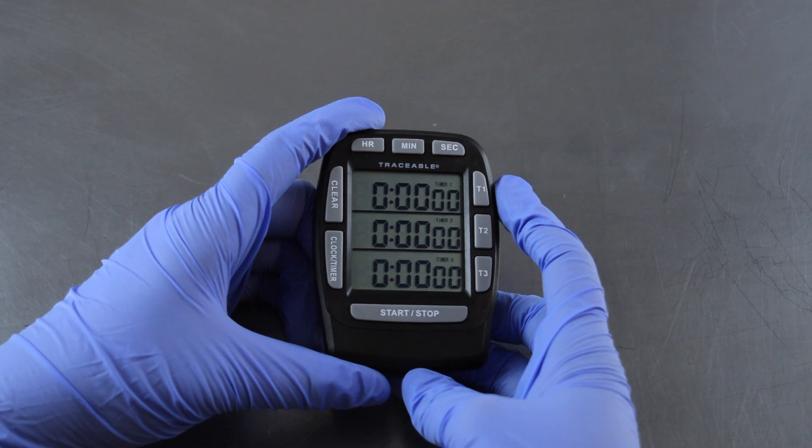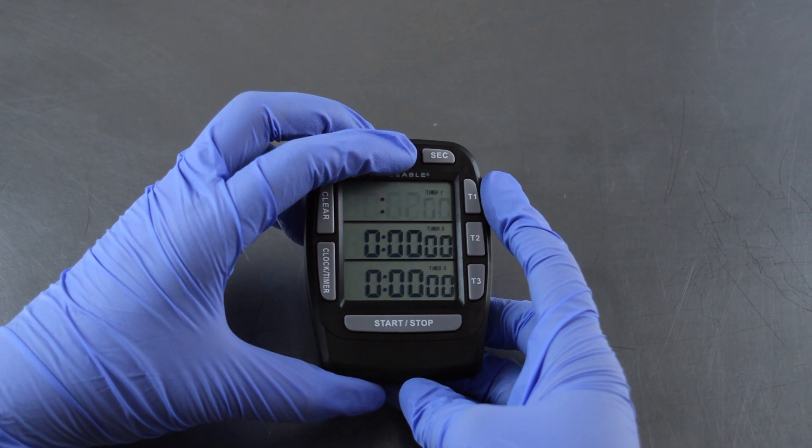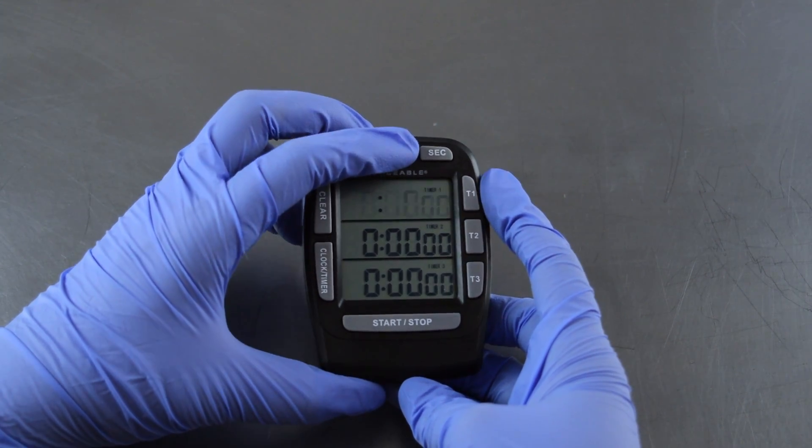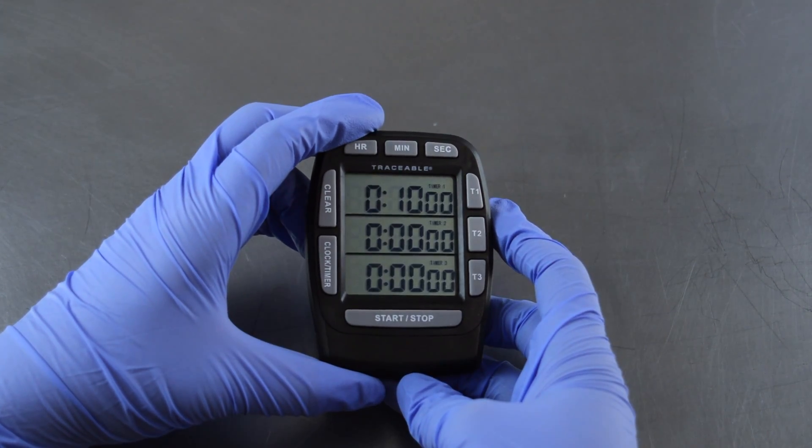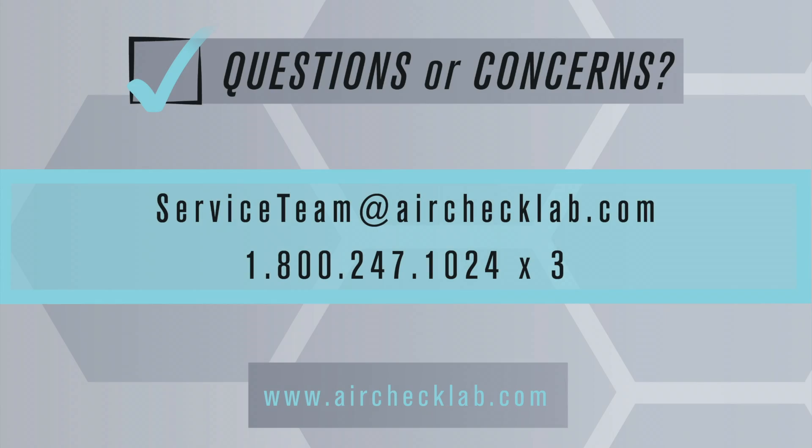If you're testing for microorganisms in your compressed air, you only need to use T1. Set for 10 minutes and press T1 again to lock. To begin timer 1 only, press T1. You are now ready to use your timer.